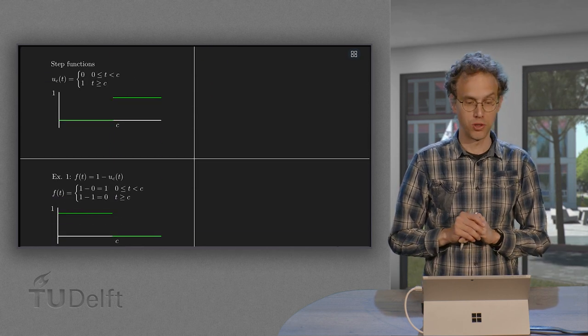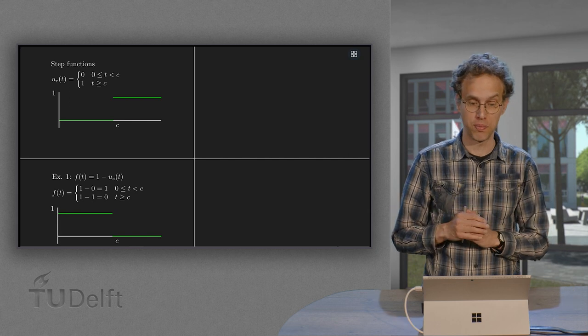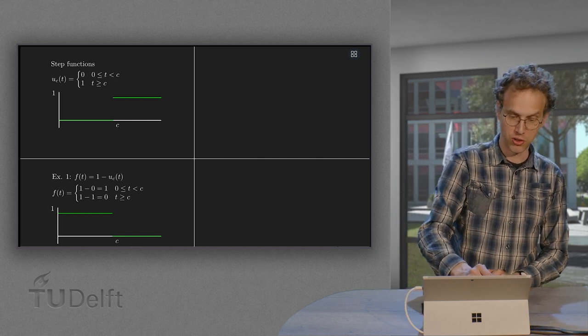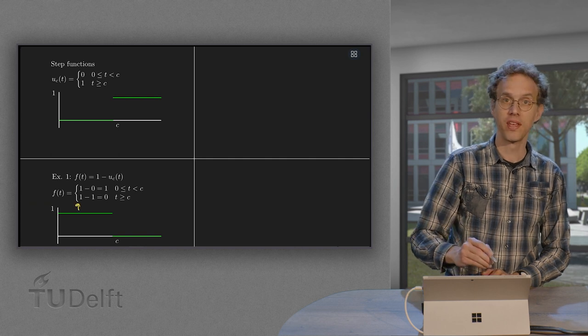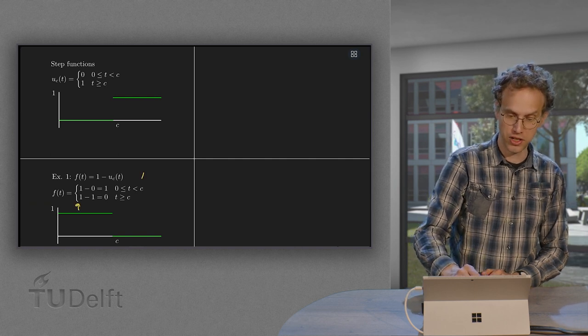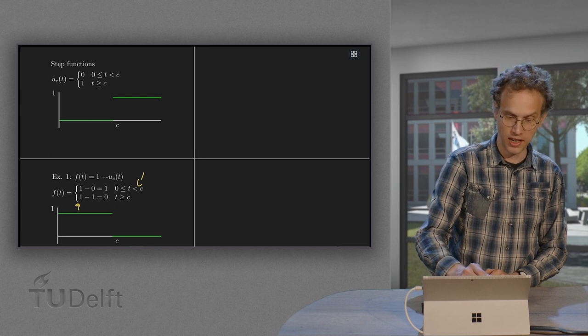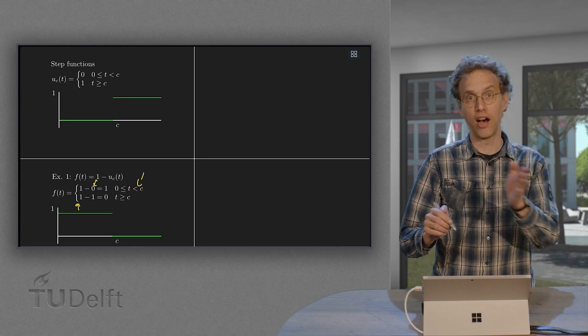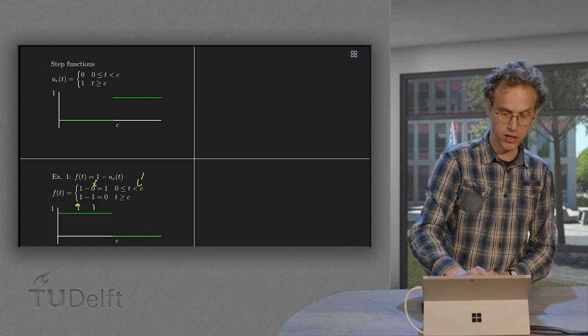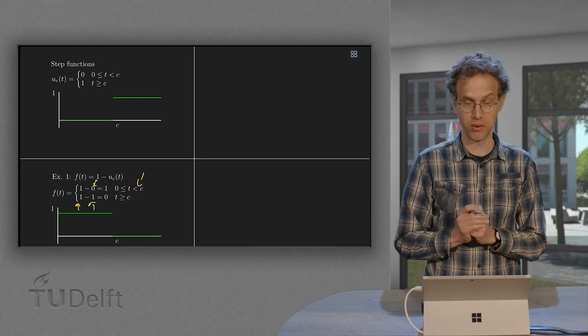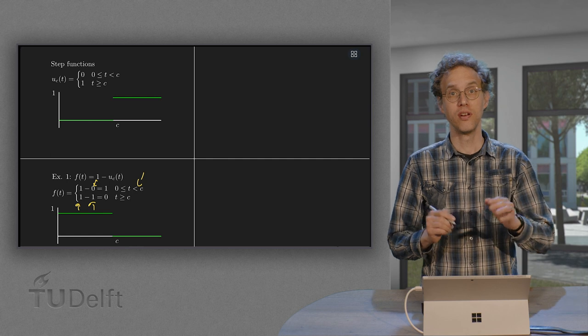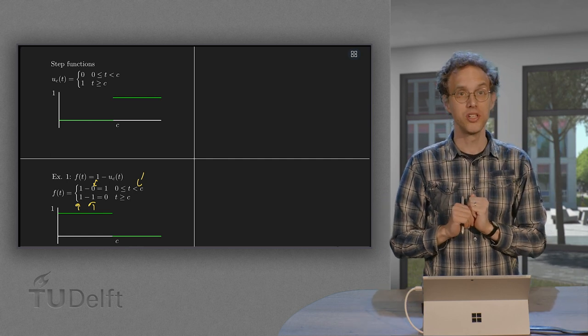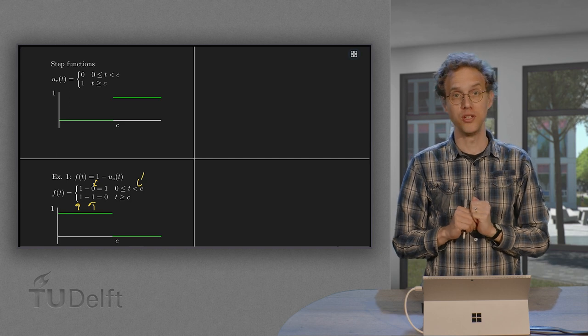Now let's do some first computations. What happens if we do 1 minus uc? So 1 minus uc, that means we are 1. And then until time c, the uc is 0. So we have 1 minus 0 equals 1. And afterwards our uc equals 1. So we have 1 minus 1 equals 0. So how does this look? We are 1 up till time c and then jump back to 0. So that is what 1 minus uc does.